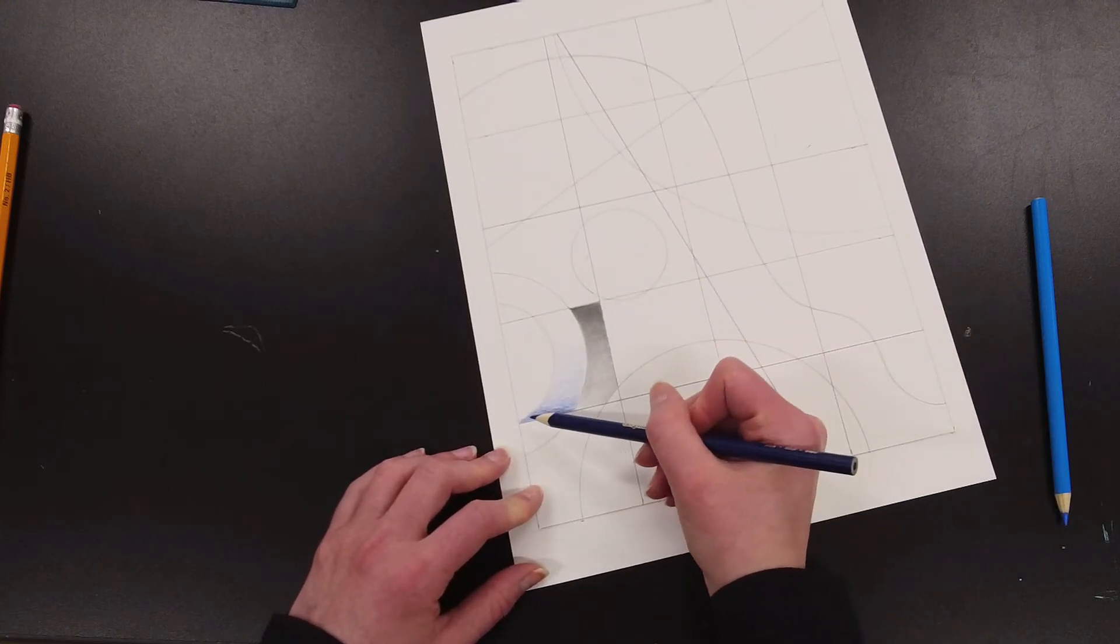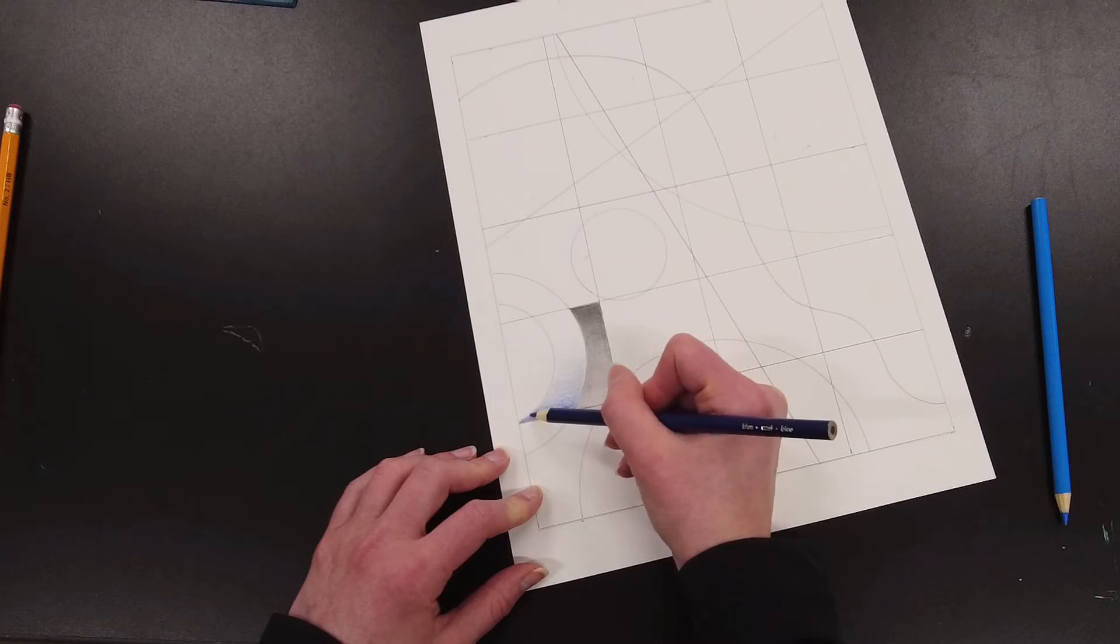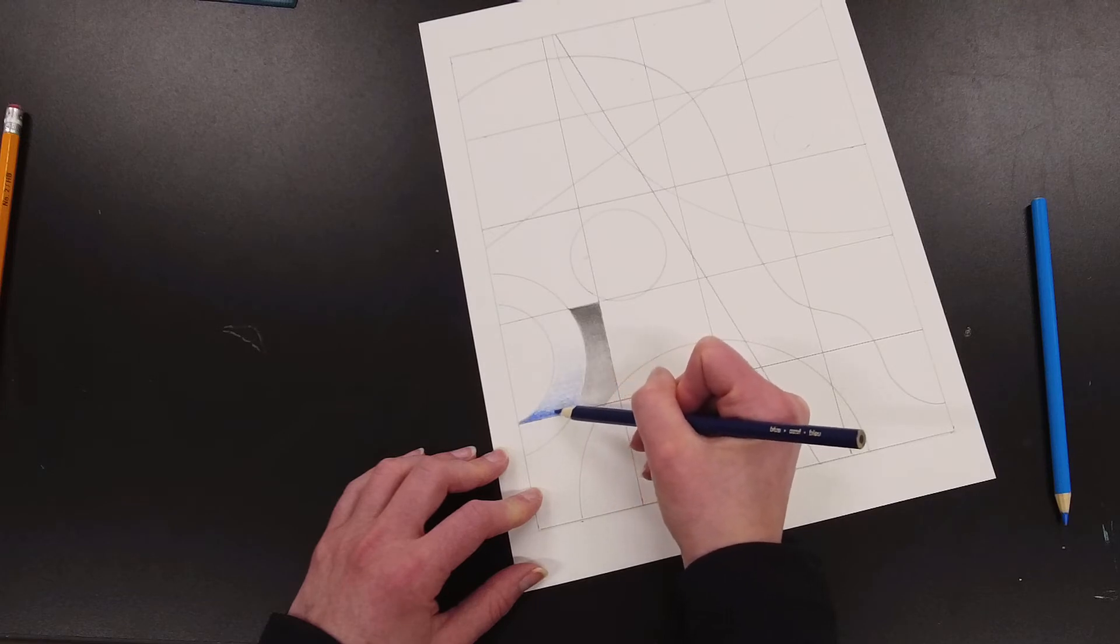Now I'm going to turn my page so that I can go in the opposite direction a little bit, very carefully around this little corner spot, still not pressing down super hard.